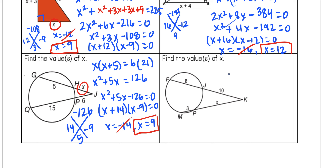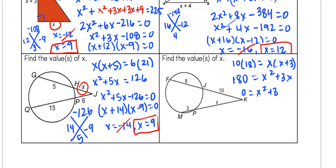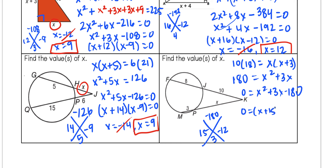In the last example: 10 times 18 equals x times (x+3). That gives 180 equals x squared plus 3x, so x squared plus 3x minus 180 equals zero. We need factors of negative 180 that add to 3: 15 and negative 12 work. Our binomials are (x+15)(x-12) equals zero, so x equals negative 15 or x equals 12. Since x is a segment length and cannot be negative, our only solution is x equals 12.